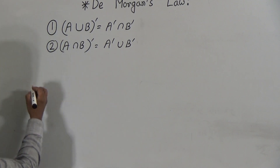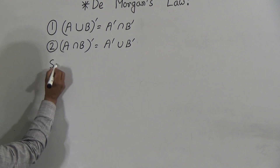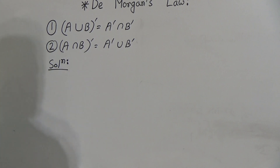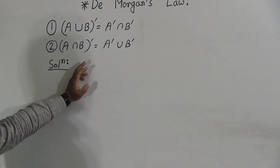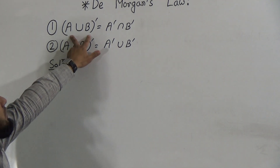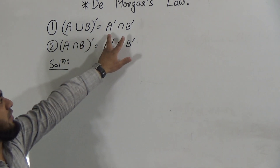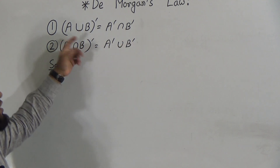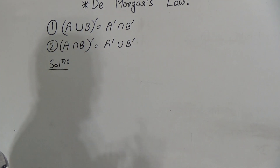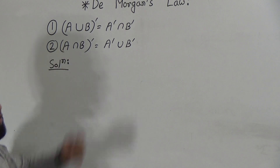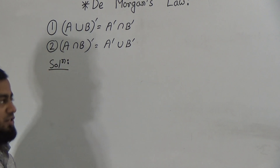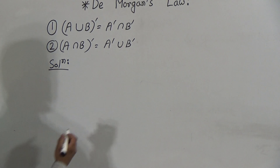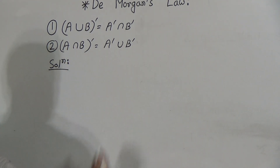For solving proposition one, we will first prove that the left hand side is a subset of the right hand side, and the right hand side is also a subset of the left hand side. So we can say that these two sides are equal to each other. To prove this, we first need to prove the left hand side is a subset of the right hand side.